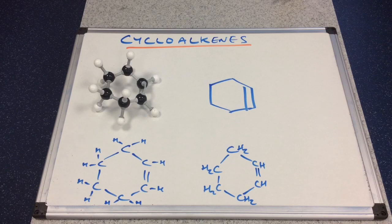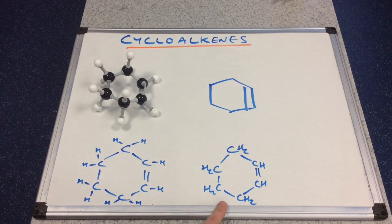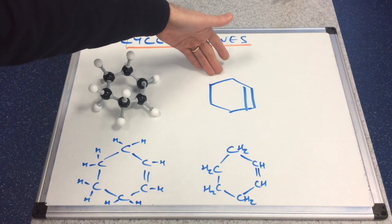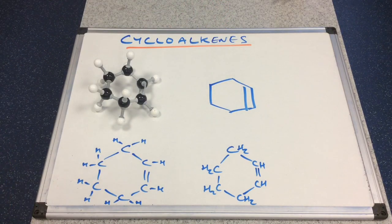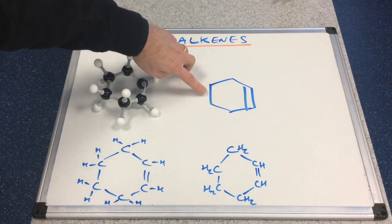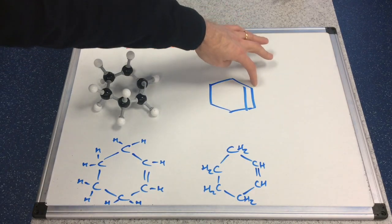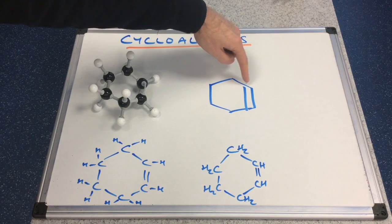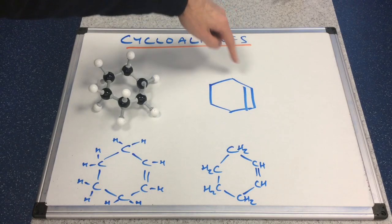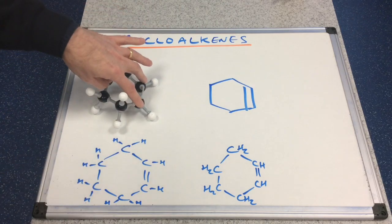In terms of drawing cycloalkenes, there's the displayed formula, a condensed displayed formula that we can use, and the skeletal formula. Just remember each carbon forms four bonds. On these four carbons, you've got two bonds going to other carbons, so two hydrogens on each. On these two carbons at the double bond, you've got three bonds, so you can only put one hydrogen on there, as you can see on the model.